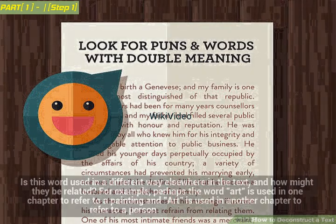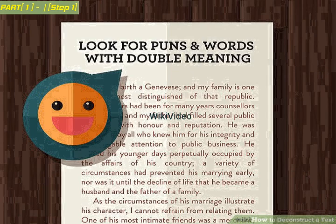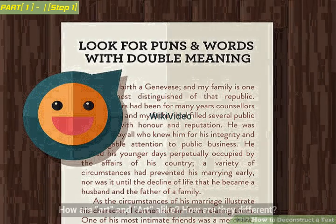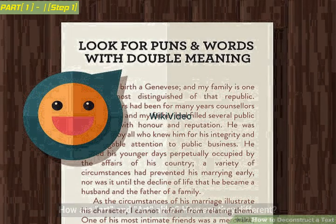Is this word used in a different way elsewhere in the text, and how might they be related? For example, perhaps the word 'art' is used in one chapter to refer to a painting, and 'art' is used in another chapter to refer to a person. How are these two uses of 'art' alike? How are they different?